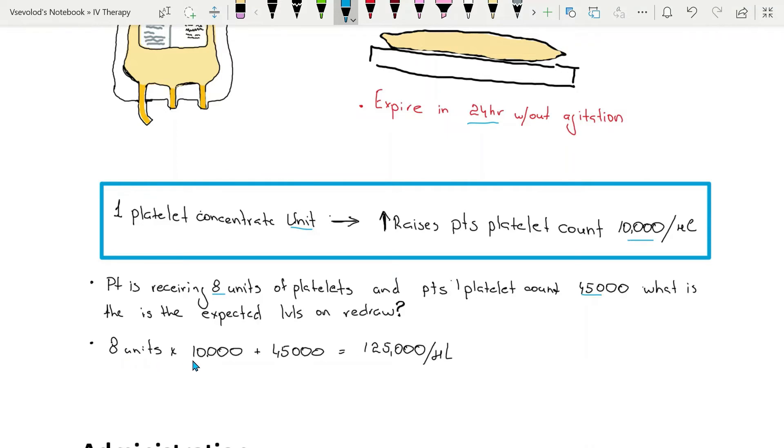So 8 units are multiplied by 10,000 expected platelets per microliter and added to patient's previous platelet count of 45,000.